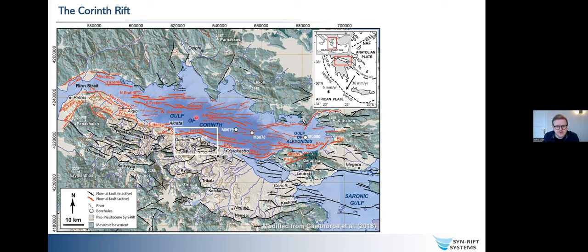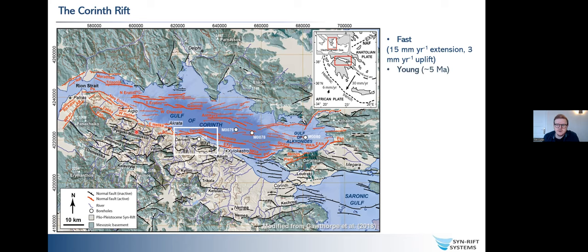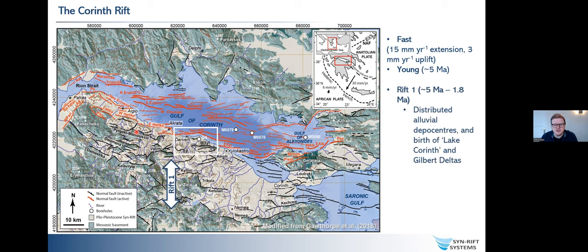The Gulf of Corinth is a fast rift by most standards, with around 15 millimeters per year extension, and especially in the west has extremely high rates of uplift still today. It's around 5 million years old. We can split it into two major mega-sequences. The Rift 1 mega-sequence was mostly localized on the southern margin as a set of quite distributed and isolated alluvial depocenters, which eventually evolved into Lake Corinth, terminated with a load of Gilbert deltas feeding into this lake.